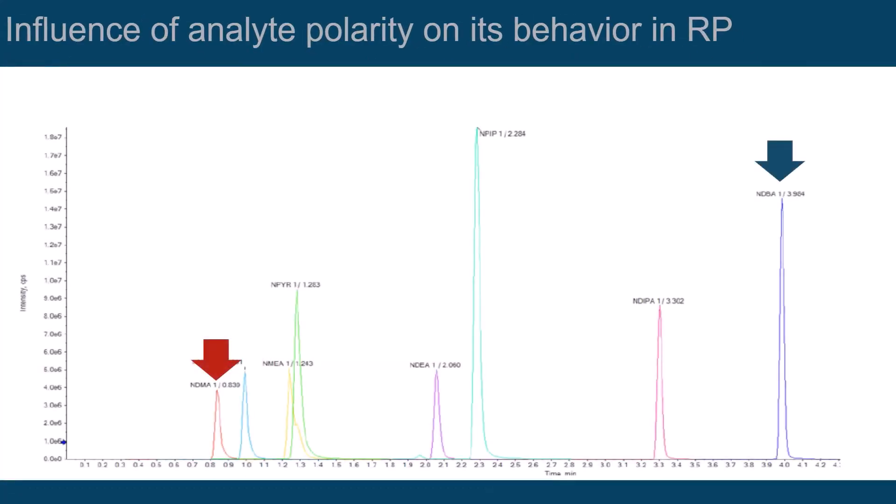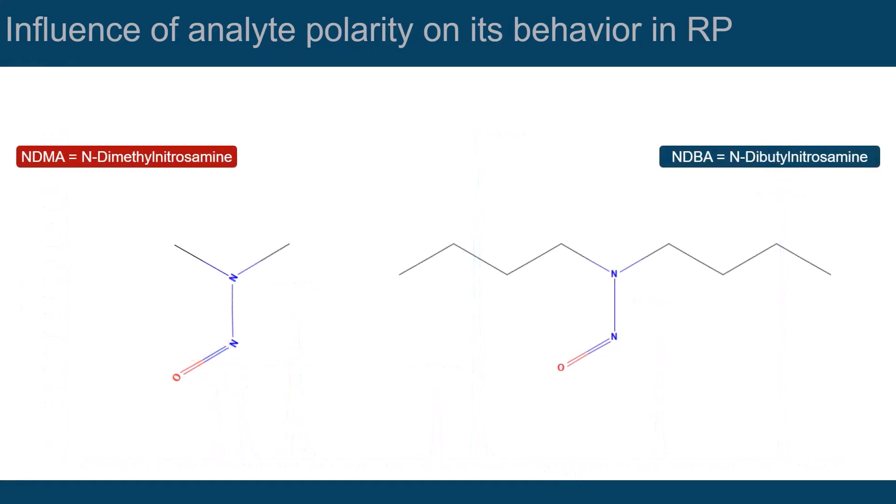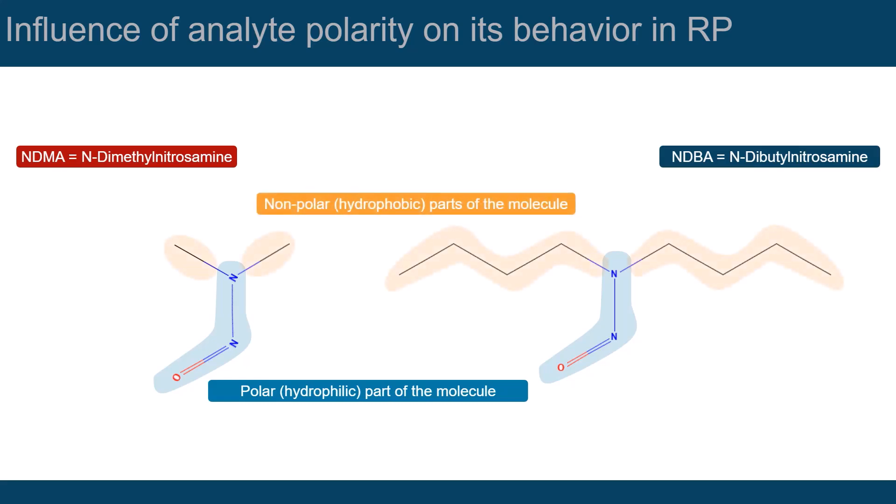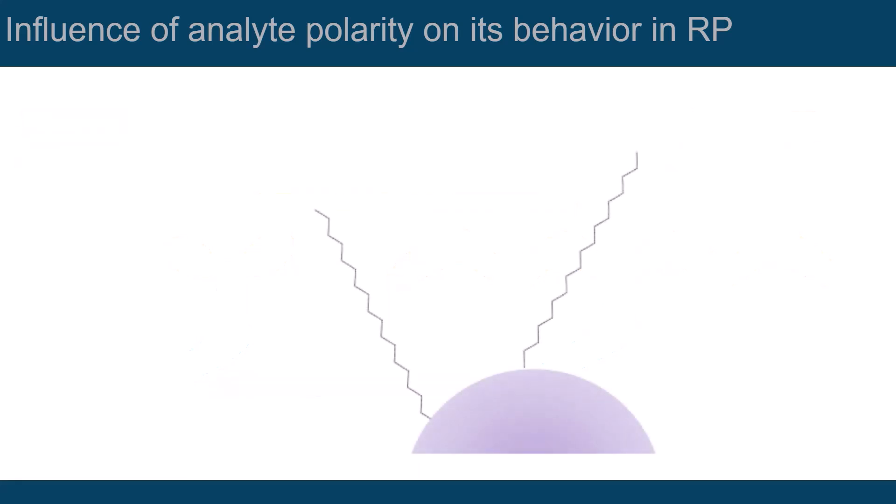Let's look at just the first and last analytes eluting from the column to see how reversed-phase chromatography works. These are the molecules NDMA and NDBA. They have the same hydrophilic head group, but the non-polar or hydrophobic parts of the molecules differ in size. This means that NDMA is the more polar molecule compared to the more non-polar NDBA. What happens when they are injected onto the column?